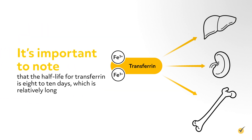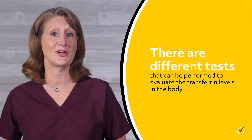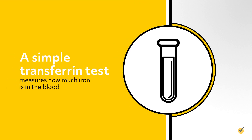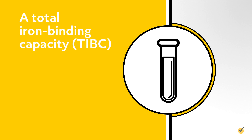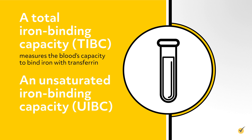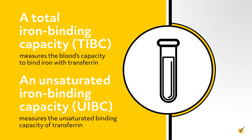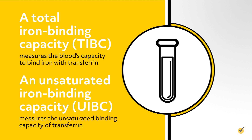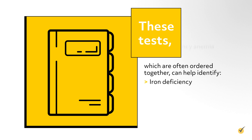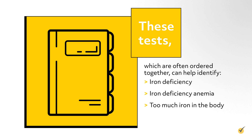It's important to note that the half-life for transferrin is eight to ten days, which is relatively long. There are different tests that can be performed to evaluate transferrin levels in the body. A simple transferrin test measures how much iron is in the blood. A total iron binding capacity, or TIBC, measures the blood's capacity to bind iron with transferrin. An unsaturated iron binding capacity, or UIBC, measures the unsaturated binding capacity of transferrin. These tests, which are often ordered together, can help identify iron deficiency, iron deficiency anemia, or too much iron in the body.